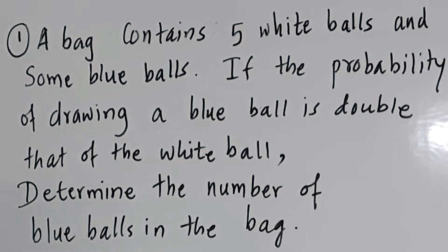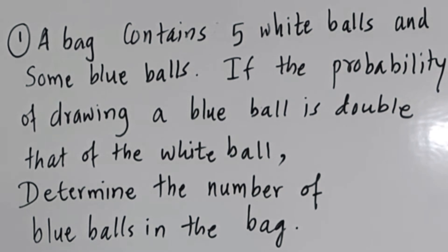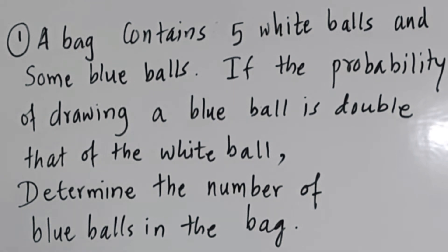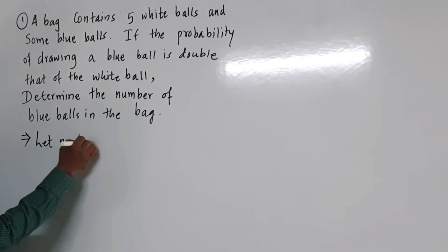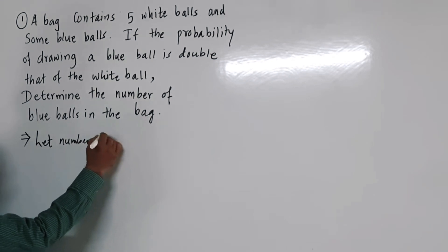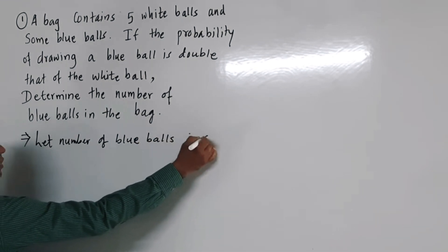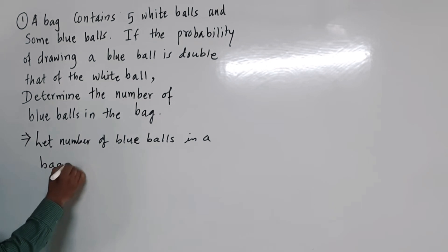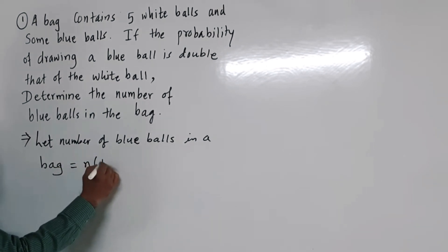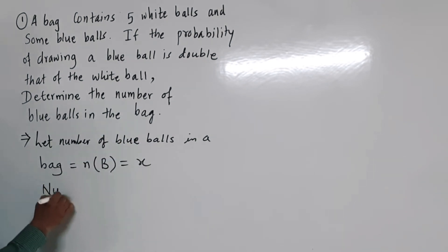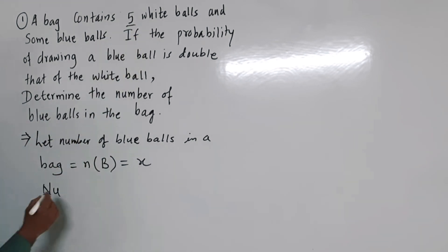First example: a bag contains 5 white balls and some blue balls. If the probability of drawing a blue ball is double that of the white ball, determine the number of blue balls in the bag. So let us assume the number of blue balls in the bag is denoted by x.